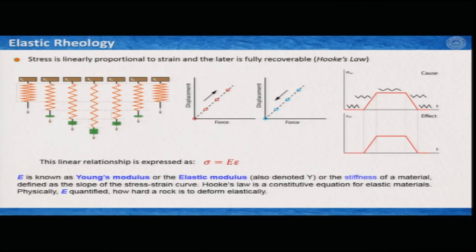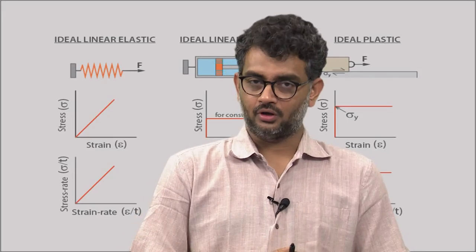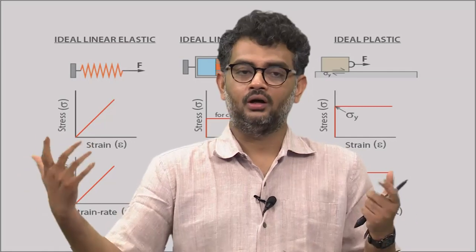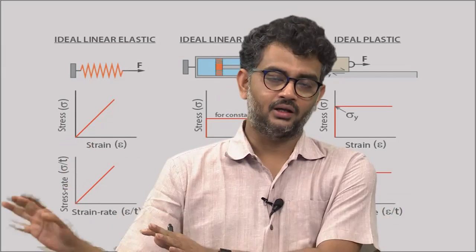The definition of elastic rheology is given by Hooke's law, which says that stress is linearly proportional to strain, and the latter is fully recoverable. Elastic rheology is best visualized by a spring, or an elastic band or rubber band. If you stretch it, it expands, and if you release it, it comes back to its original position. But if you stretch it too much, it does not come back — but that is something different.